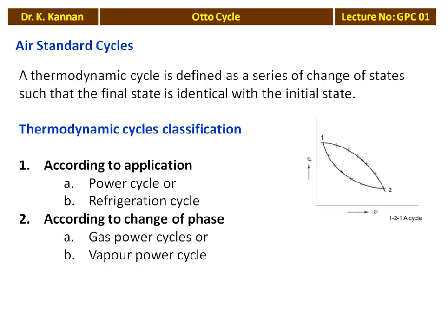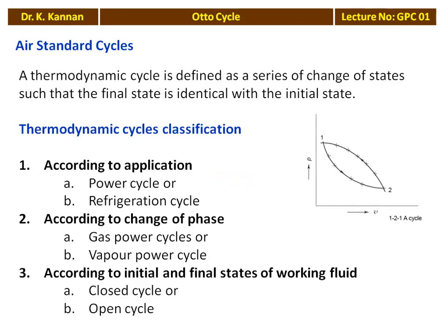The refrigeration cycle is also a vapour power cycle, as the refrigerant alternates between vapour and liquid. According to the initial and final state of the working fluid, cycles may be closed cycle or open cycle. Closed cycles are hypothetical or theoretical, while all practical cycles are open cycles. In an open cycle, mass and energy cross the boundary; in a closed cycle, mass remains constant and only energy crosses the boundary.